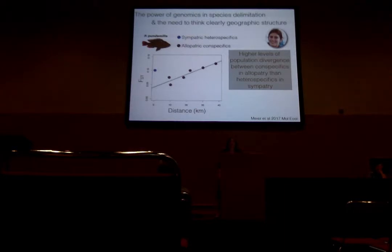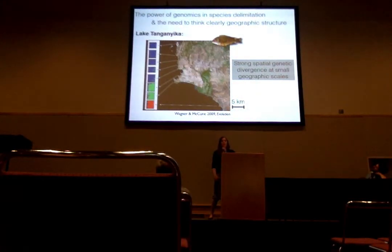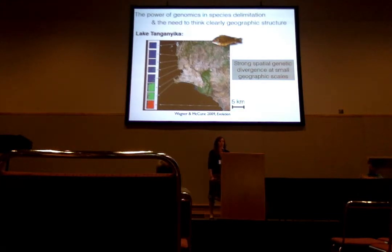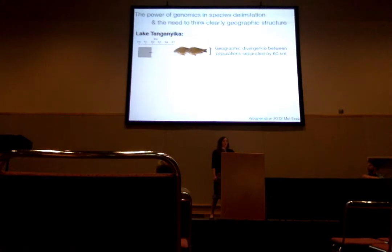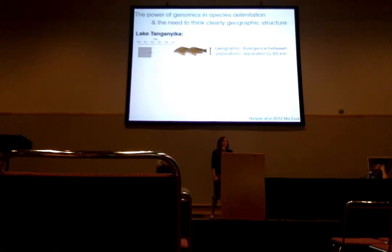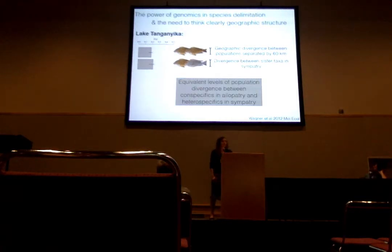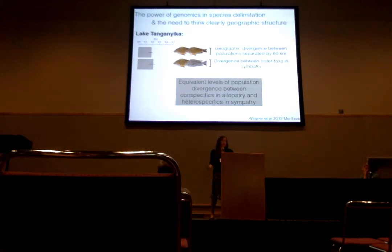This isn't a result unique to Lake Victoria. Going to a completely different lake in Africa, a completely different set of endemic species — this is old work from my PhD — there is a species with very strong spatial genetic structure called Petrochromis kuzumbe. If we look at populations of that species separated by 60 kilometers of coastline and compare that divergence to pairwise FST between Petrochromis kuzumbe and its sister taxon in sympatry, we again see roughly equivalent levels of population divergence between conspecifics in allopatry compared to heterospecifics in sympatry.